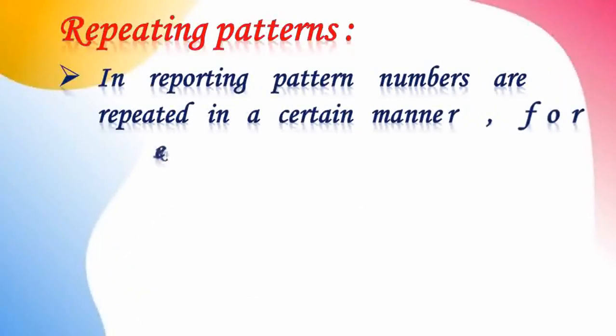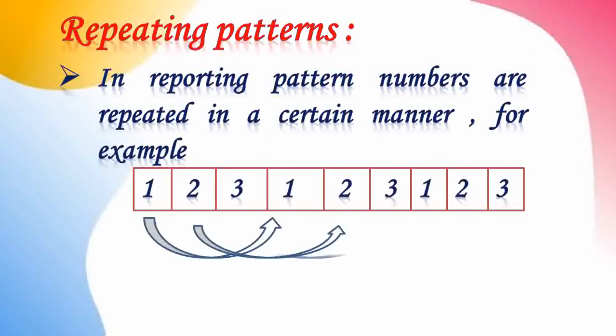In a repeating pattern, numbers are repeated in a certain manner. For example: one, two, three — again one, two, three — the same numbers are repeating themselves. We should always keep in mind that in a repeating pattern, there is a repeat of certain numbers in a fixed manner: one, two, three; one, two, three; one, two, three.